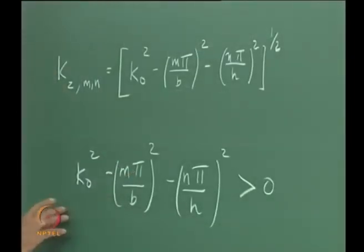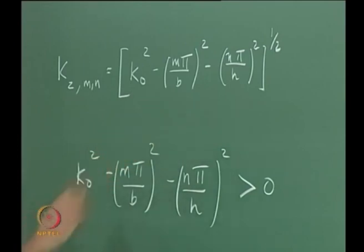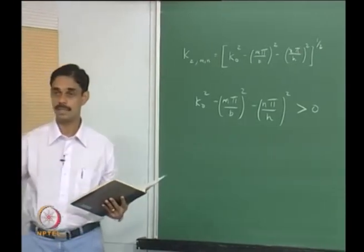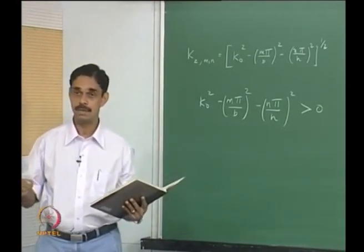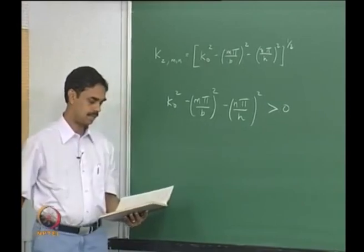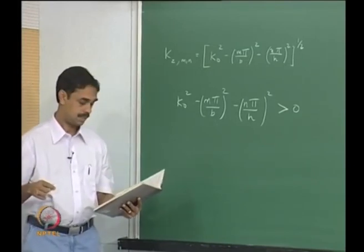This gives real roots for kz(m,n), meaning you will have propagating solutions of the form e^(ikz) and e^(−ikz). Now if this quantity becomes imaginary — say iα — then e^(i·iα) = e^(−α), so you do not get a propagating solution but instead get attenuated solutions. A mode will propagate only if k-naught² − (mπ/b)² − (nπ/h)² > 0.